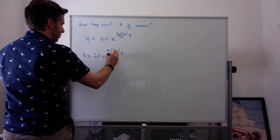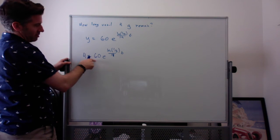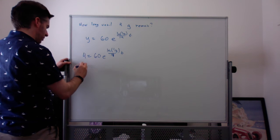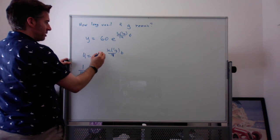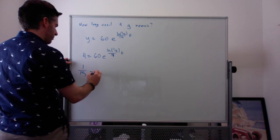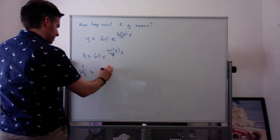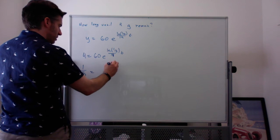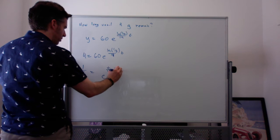I'll show you the other way people might solve this. So I'll divide by 60, 1/15 equals e^(ln(1/3)/14 times t). But sometimes people like to simplify this in the following way. Let's say this is e^(t/14 times ln(1/3)).